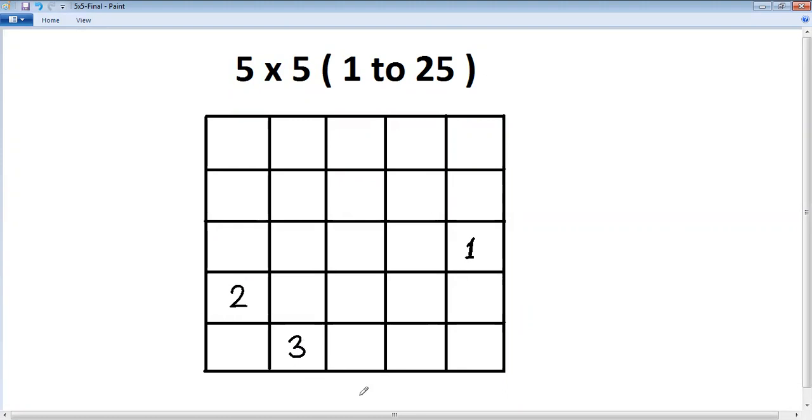So first box, 4 will come here. Down right, 5 will come here. Down right, occupied. Second rule: when it is occupied, left of current. So 6 will come here. Down right, 7. Down right, 8 here. Down right out, so first box, 9 will come here. Down right out, so first box, 10 will come here.